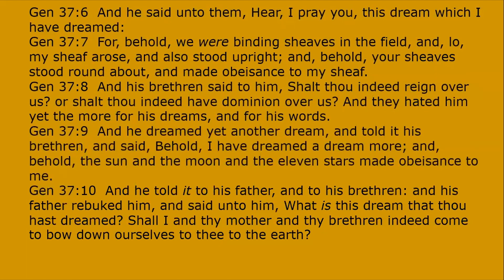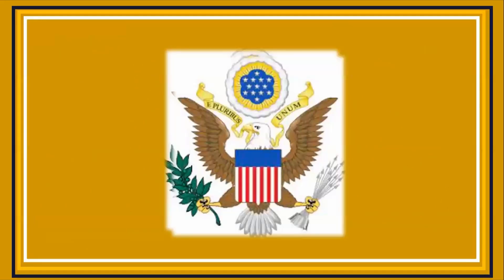That even made his father mad. His father rebuked him and said, 'What is this dream that thou hast dreamed? Shall I and your mother and your brothers indeed bow down ourselves to thee?' So he was dreaming a dream that would actually come true. This was Joseph's dream, but it's actually in our seal. Here's the American seal, and you can see this is the actual dream — you have the sheaves here, you have the clouds, the sky and all the stars which represented his brothers.